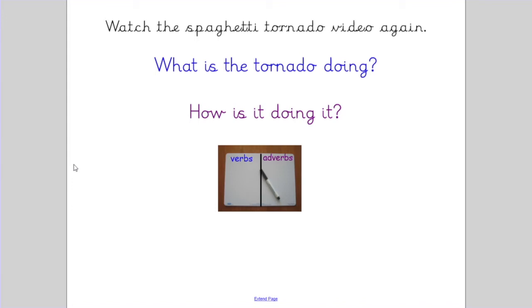The second question you're going to ask yourself is: how is it doing it? We're going to create a list of adverbs by asking ourselves that question. Maybe you can see that the tornado is rotating and you're going to say, how is it doing it? You might choose the adverb violently - it's rotating violently. You might choose to say that the tornado is rotating rapidly. So you're going to have that list of adverbs. These will most likely be -ly adverbs.